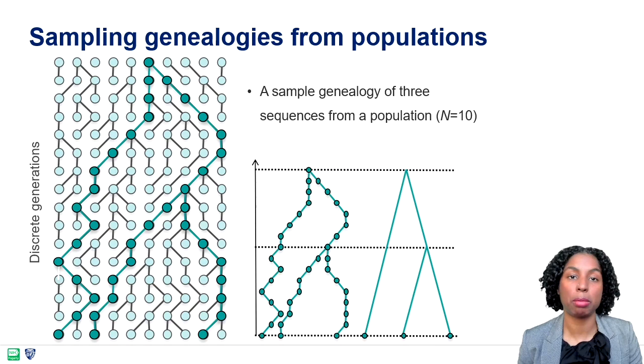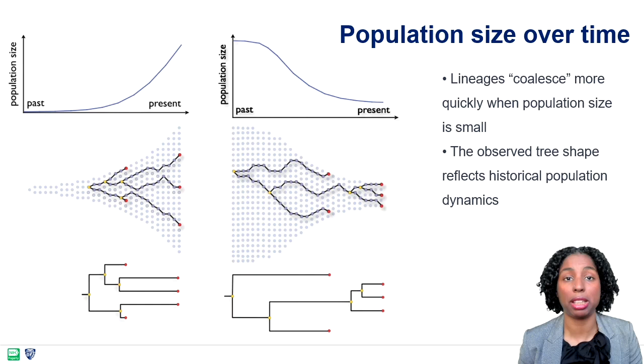A demographic function can be estimated from the genetic sequences by combining the phylogenetic and coalescent likelihoods. The probability distribution of times between coalescence events depends on the demographic function. Thus, the likelihood of the demographic function can be calculated given a specific phylogeny, since the observed tree shape reflects historical population dynamics.